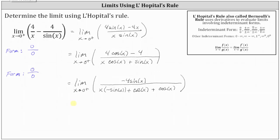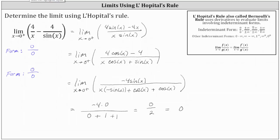Now we can determine the limit by direct substitution. As x approaches 0 from the right, negative 4 sine x approaches negative 4 times 0, which is 0. In the denominator, x times negative sine x approaches 0 times 0, or 0. Cosine x approaches 1, giving us 1 plus 1, or 2. Simplifying, we have 0 divided by 2, which equals 0. So after all that work, the original limit is equal to 0.